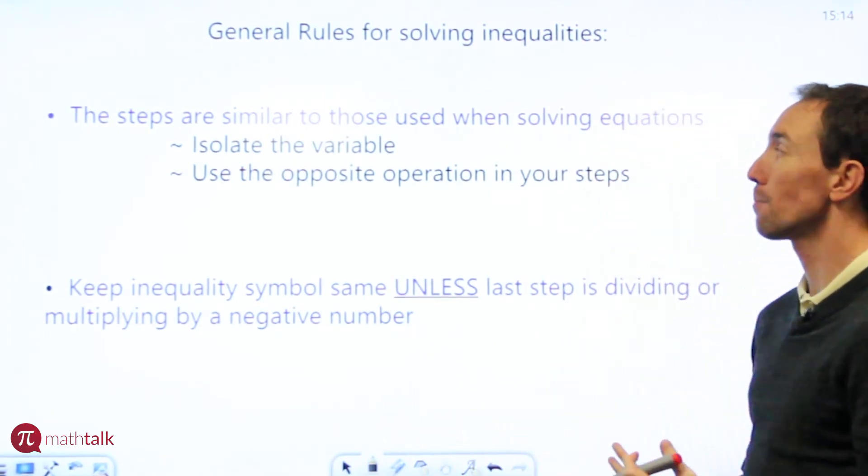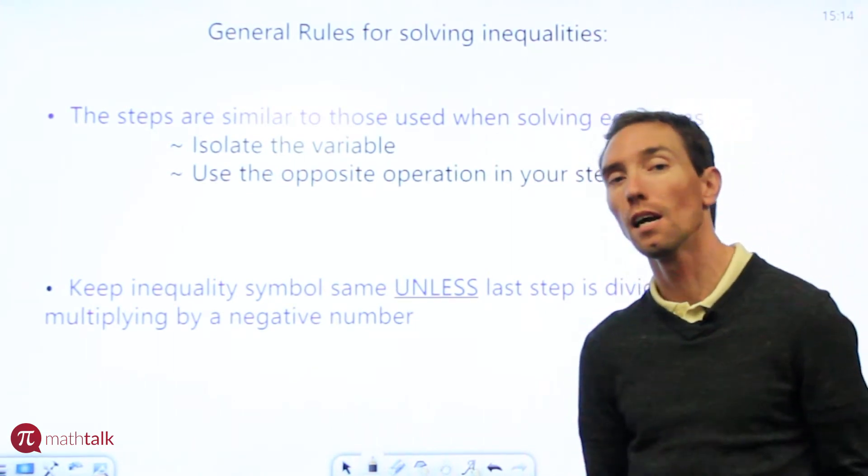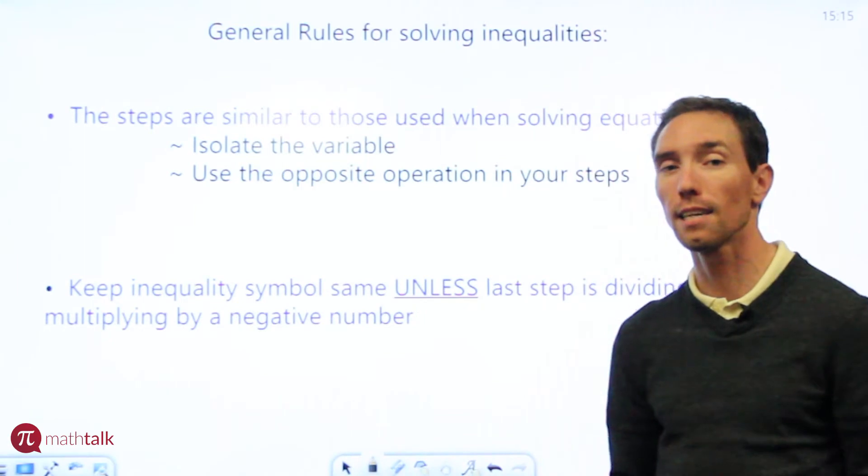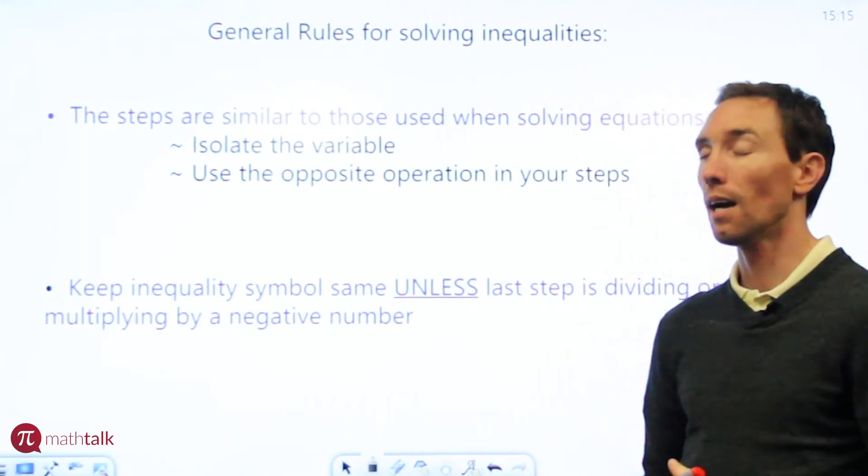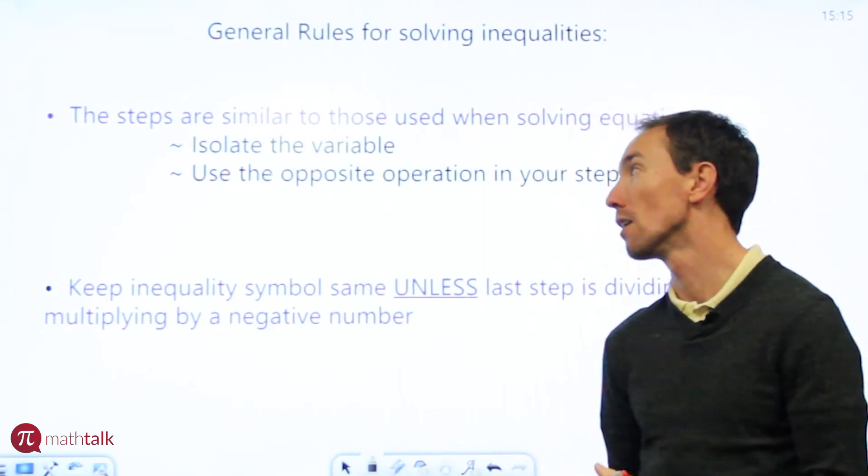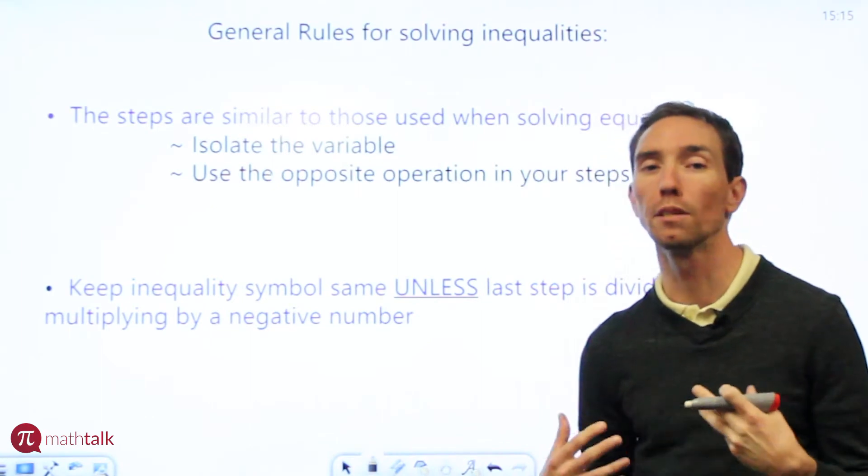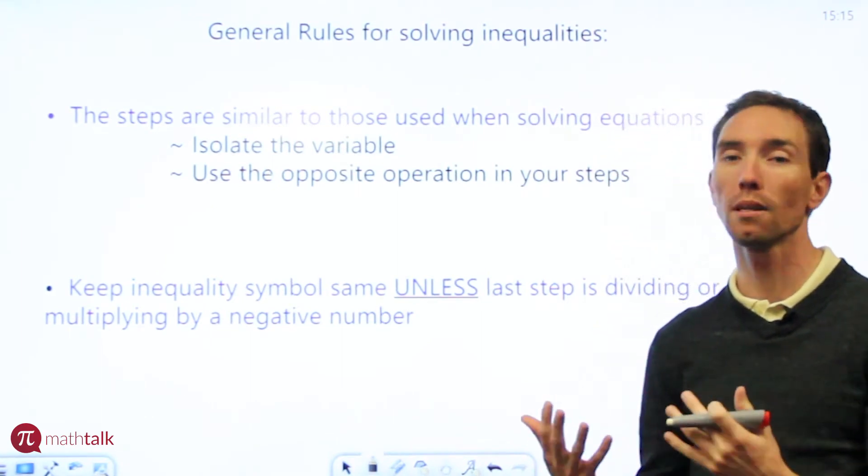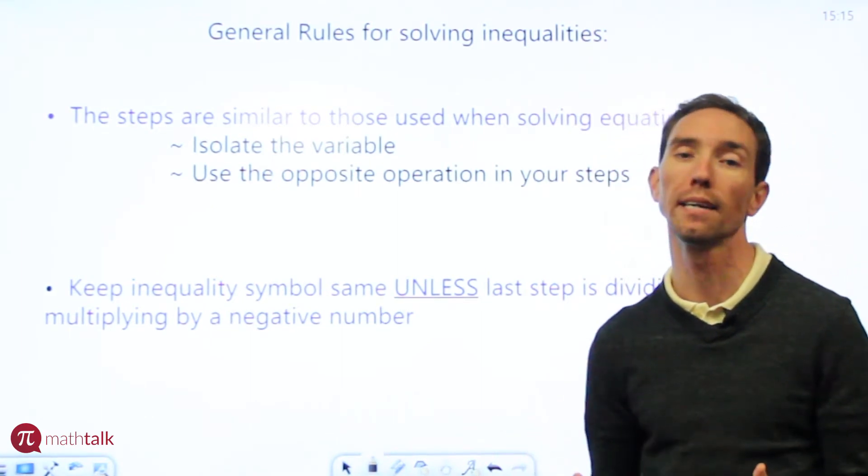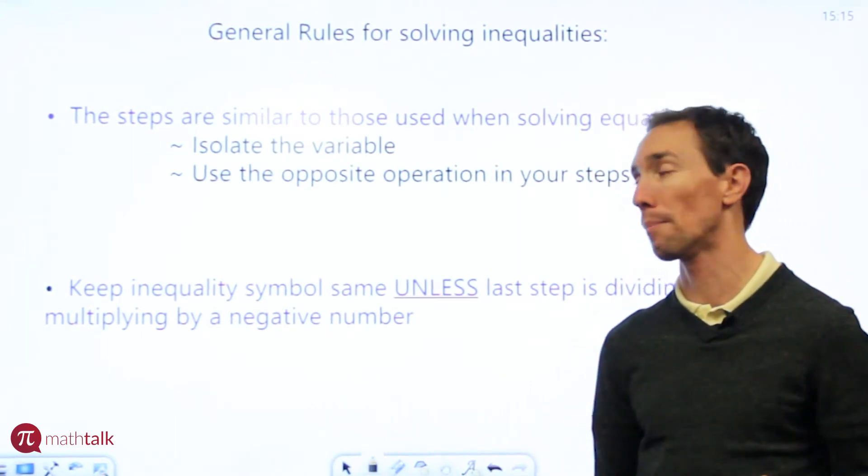First of all, the steps are very similar to those you use when you want to solve equations. Really the only difference is that instead of an equal sign you have an inequality symbol. So you still want to isolate the variable, get the variable by itself. You still want to use the opposite operation in your steps. So if you have a plus sign to solve it you use minus, or if you have a multiplication sign you use division. It's always the opposite.